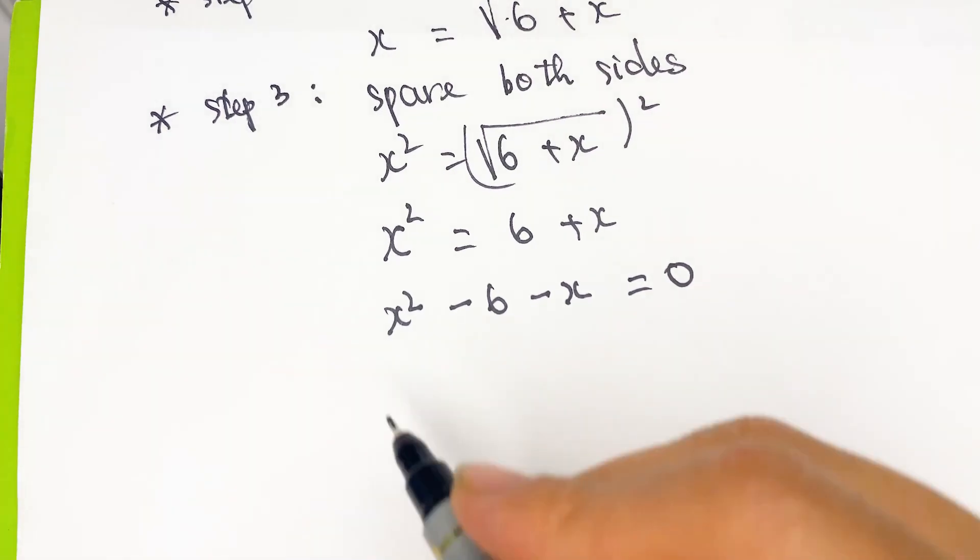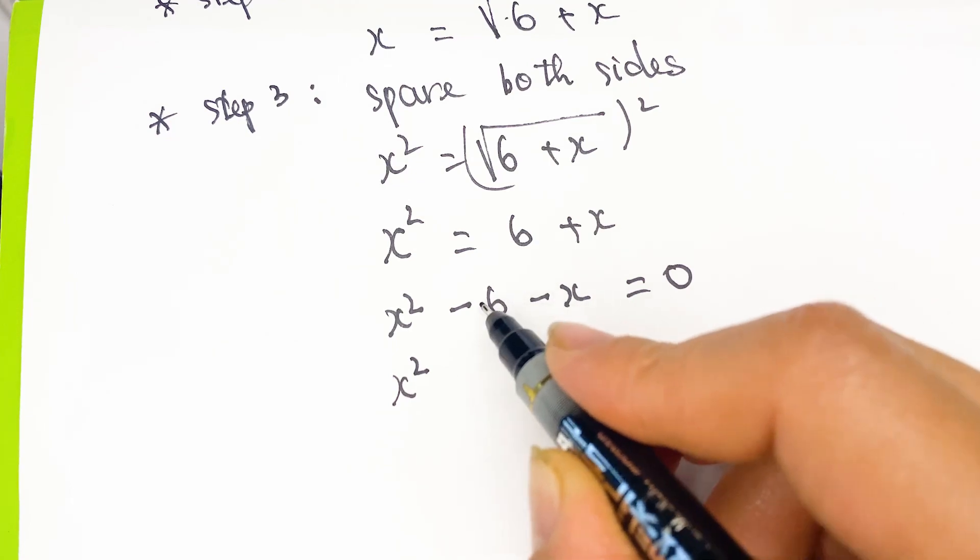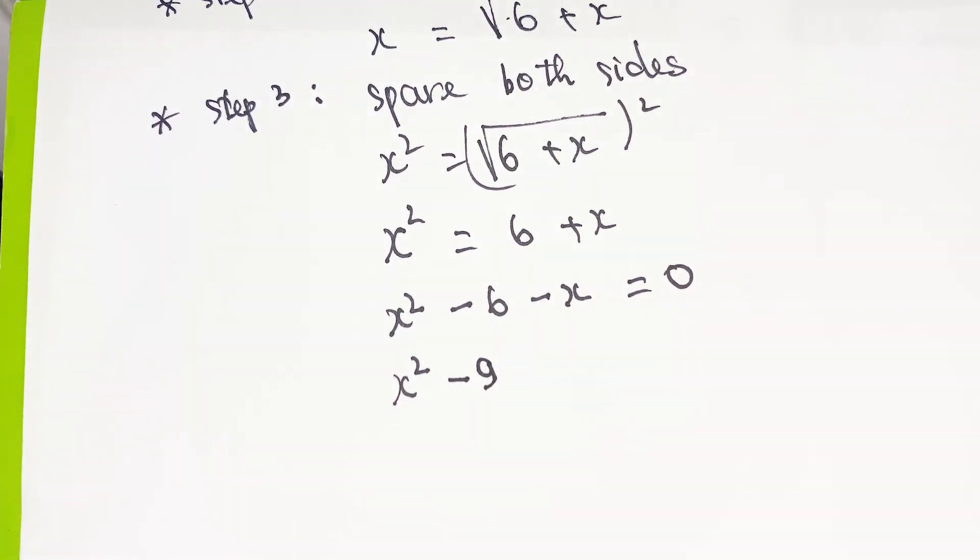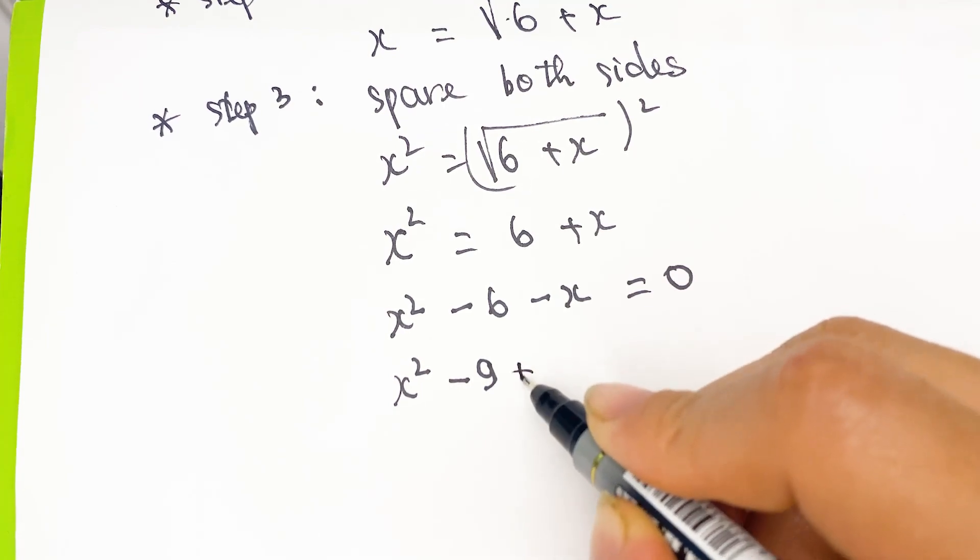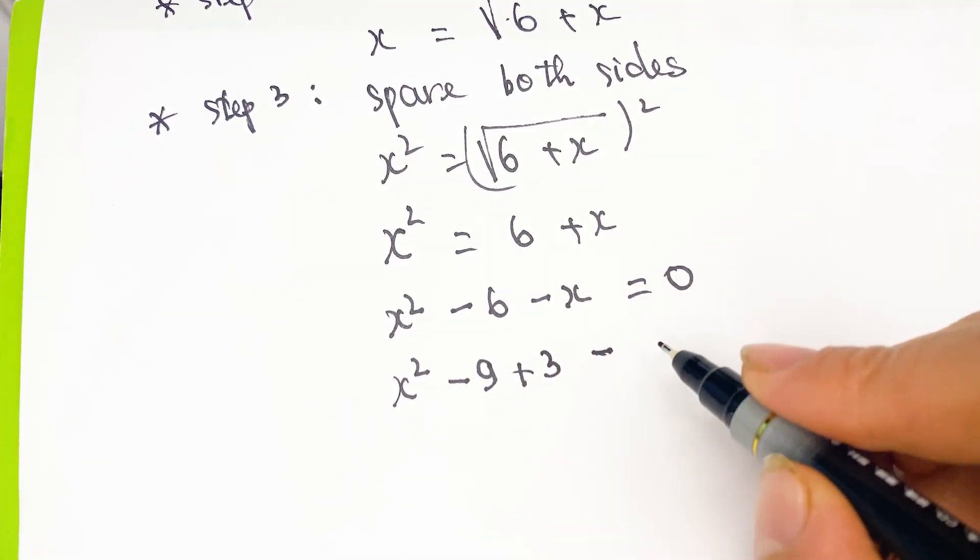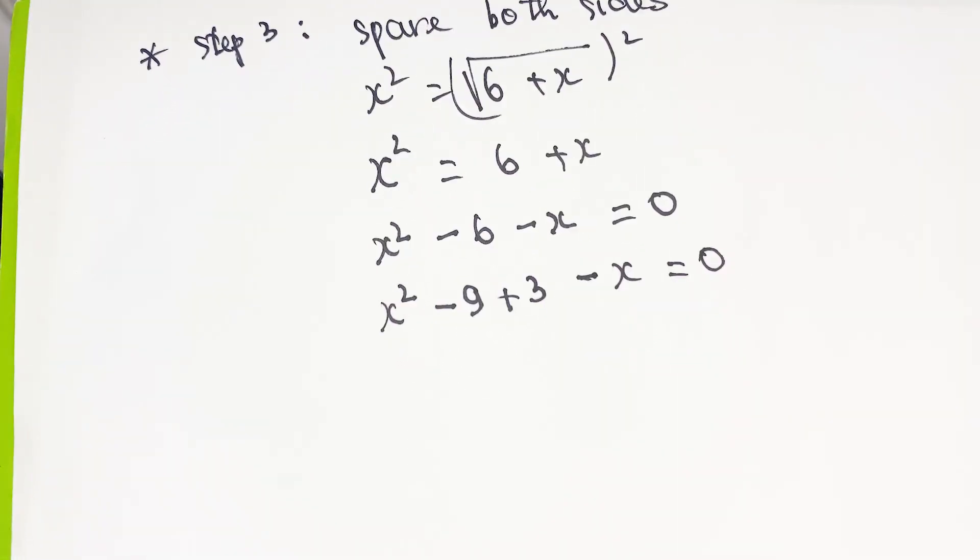And next, you can do x squared minus 9 plus 3 minus x equal to 0.